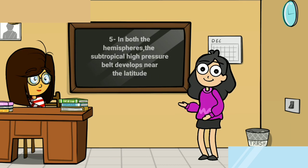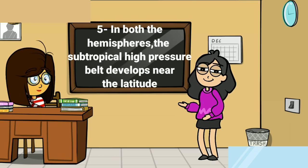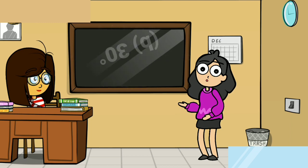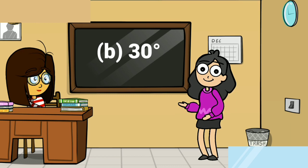Fifth question: in both the hemispheres, the subtropical high pressure belt develops near which latitude? The B option is correct — it develops near the latitude of 30 degrees.